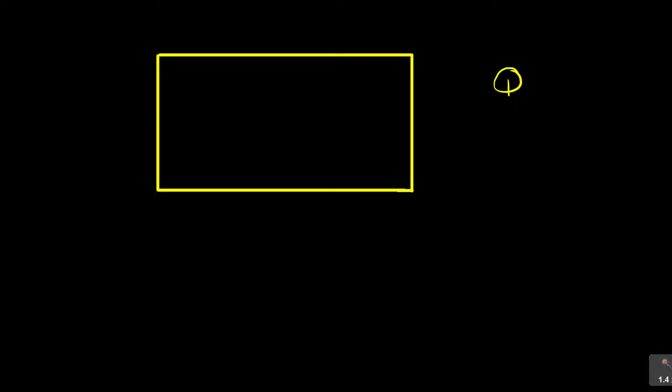Now, what does a rectangle look like? The first thing you need to know about a rectangle is that it is a four-sided shape, meaning it is a quadrilateral. And then if you are to draw one, we are looking at something like that. So this is a rectangle, and we are seeing there are properties here that you need to have when it comes to a rectangle. So it is a four-sided shape — we call that a quadrilateral. So I'll call it quad. That's the first part.